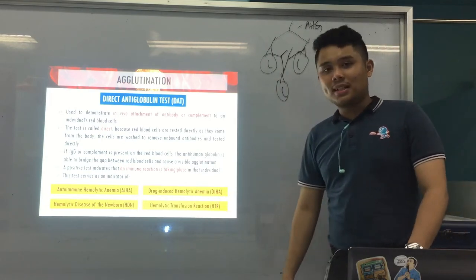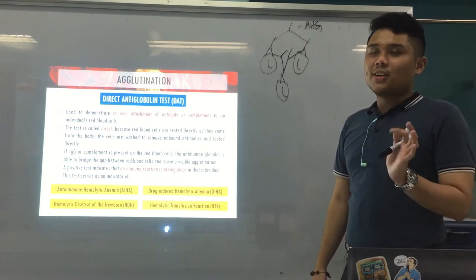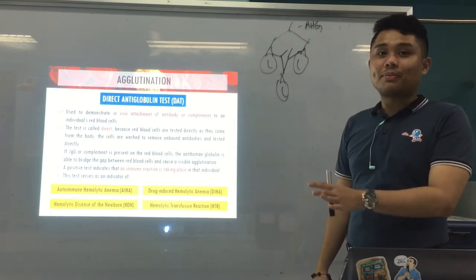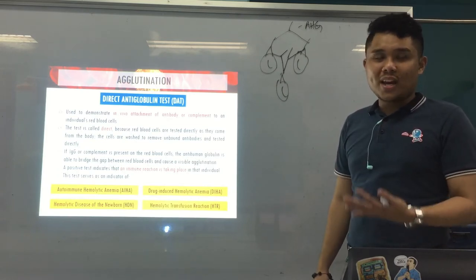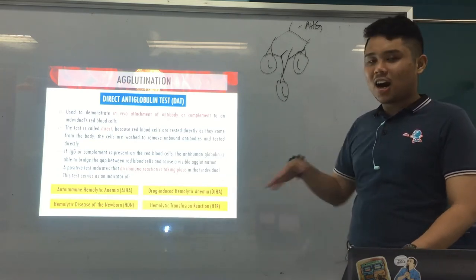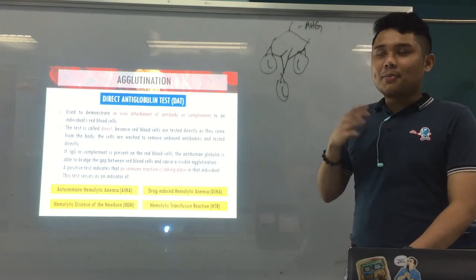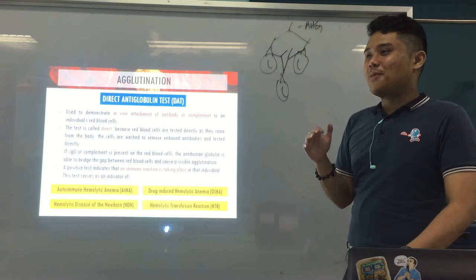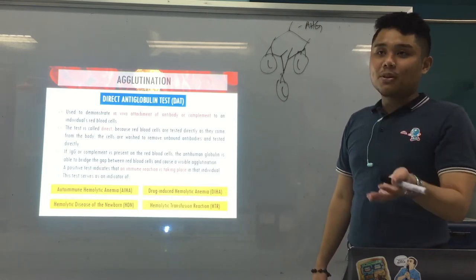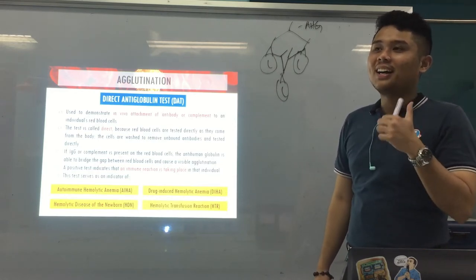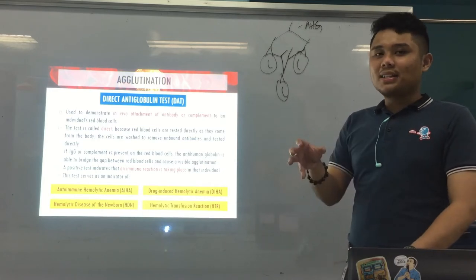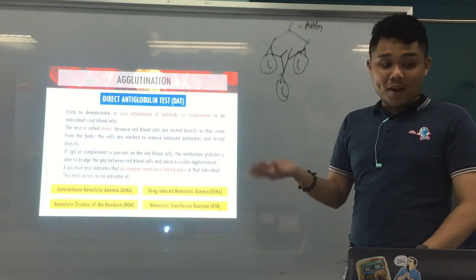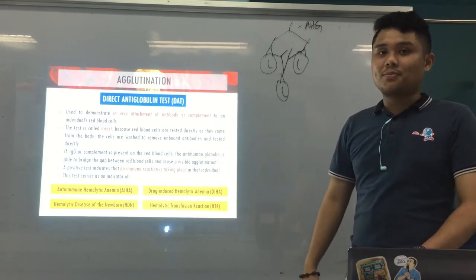Drug-induced hemolytic anemia — where a drug introduces a hapten that leads to the formation of antibodies attacking RBCs. And hemolytic transfusion reaction — where antibodies coat antigens on transfused RBCs and eventually lead to hemolysis. So we want to detect that as early as possible.